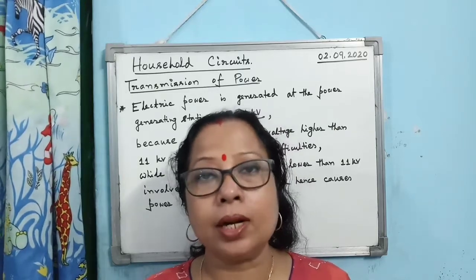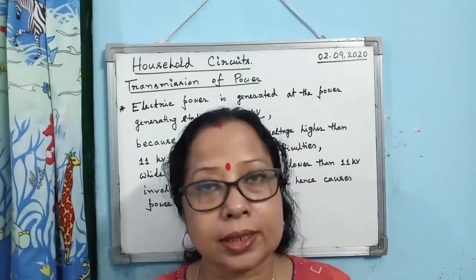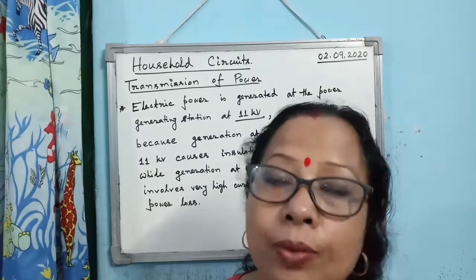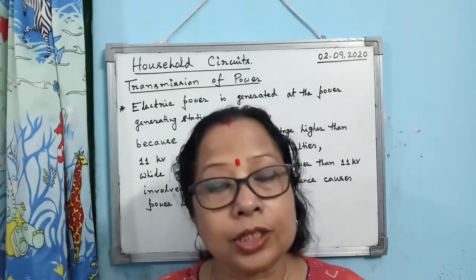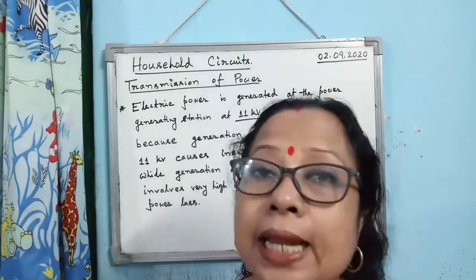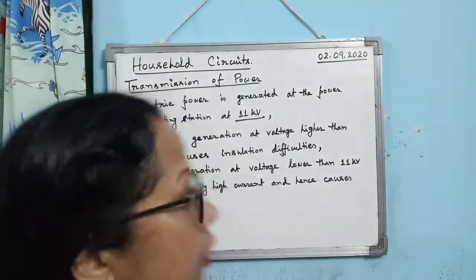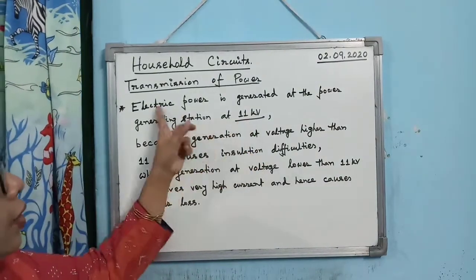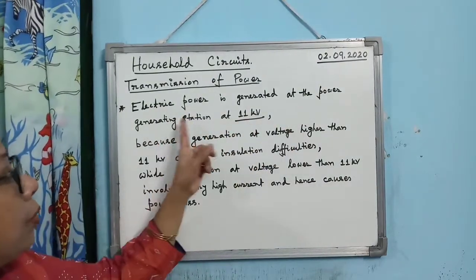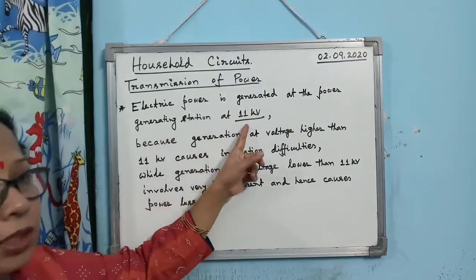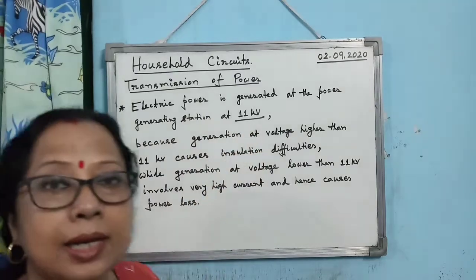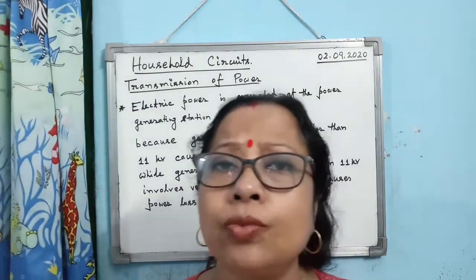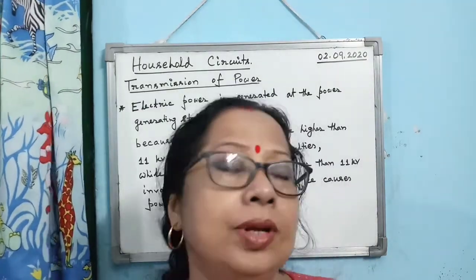Electric power is generated at power generating stations at 11 kilovolt. Now the question is: why at 11 kilovolt?